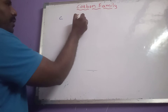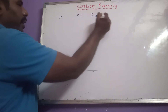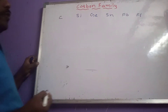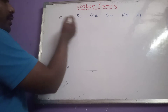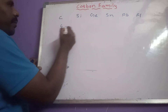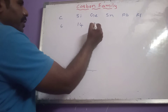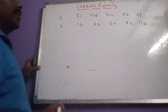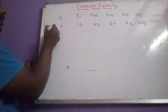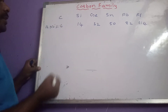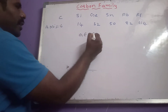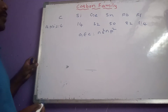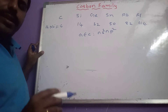The 4th A group elements are carbon, silicon, germanium, tin, lead, and flerovium. Their atomic numbers are 6, 14, 32, 50, 82, and 114 respectively. The general electronic configuration of these elements is NS2, NP2.